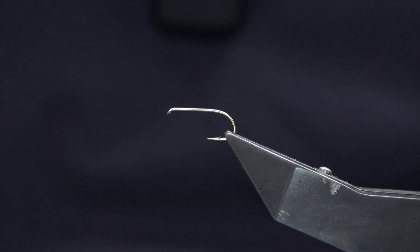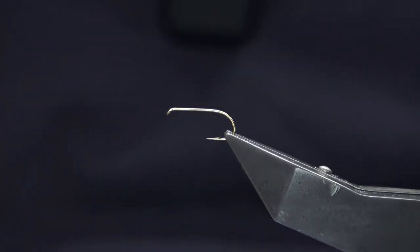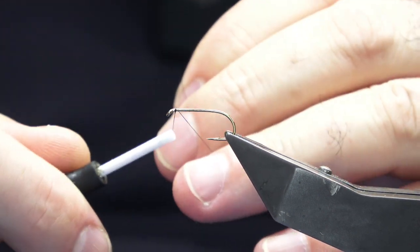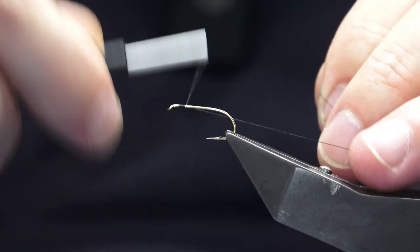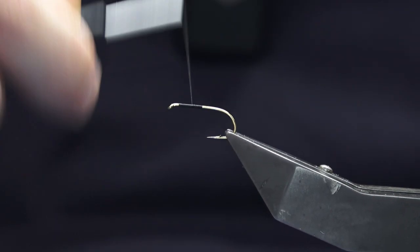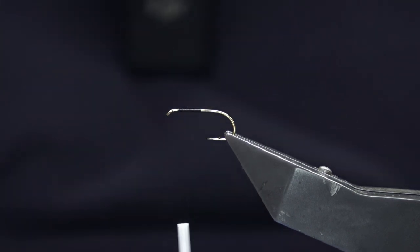The hook is a Kamasan B170, a light wire hook in size 10. I'm using uni thread in black to tie the fly, but you can use whatever thread you have. Run on a base of thread and come back up to where we started.